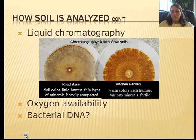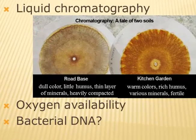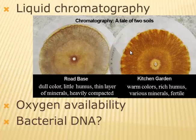They can also do chromatography. You can use chromatography for various things — drug analysis, writing pens to distinguish ink — and it's one way of looking at soil. Two examples shown: soil from a road has very dull colors, not much humus, not many minerals, and is heavily compacted. Garden soil shows warm golds and browns, lots of various minerals, and is very fertile.